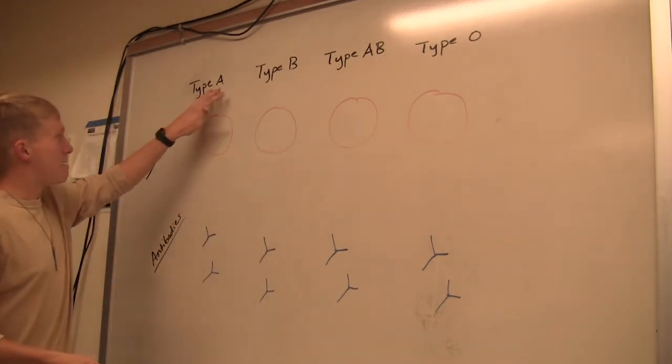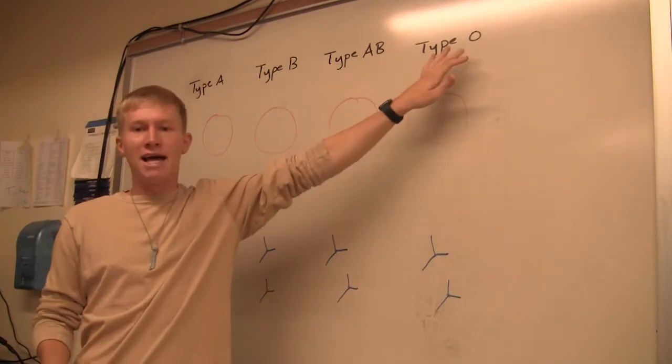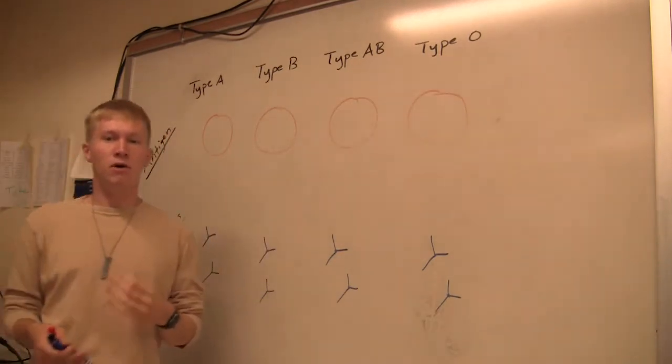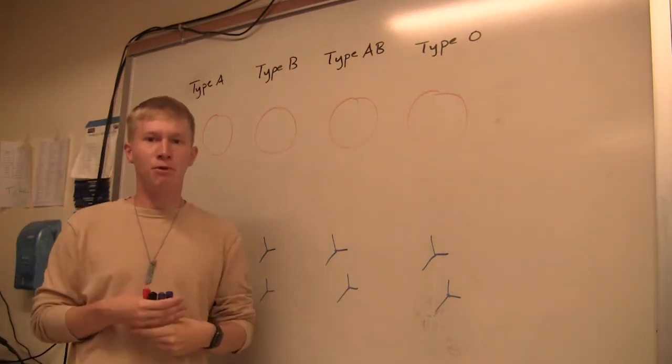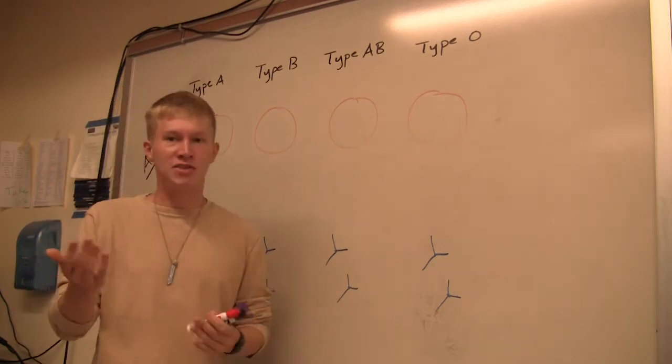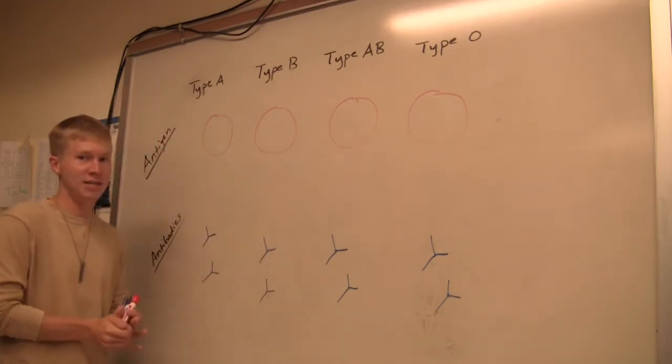We have type A, B, AB, and O blood types. So four main generic blood types, but then once you throw in an Rh factor, there are eight, and we'll get into that in just a second.